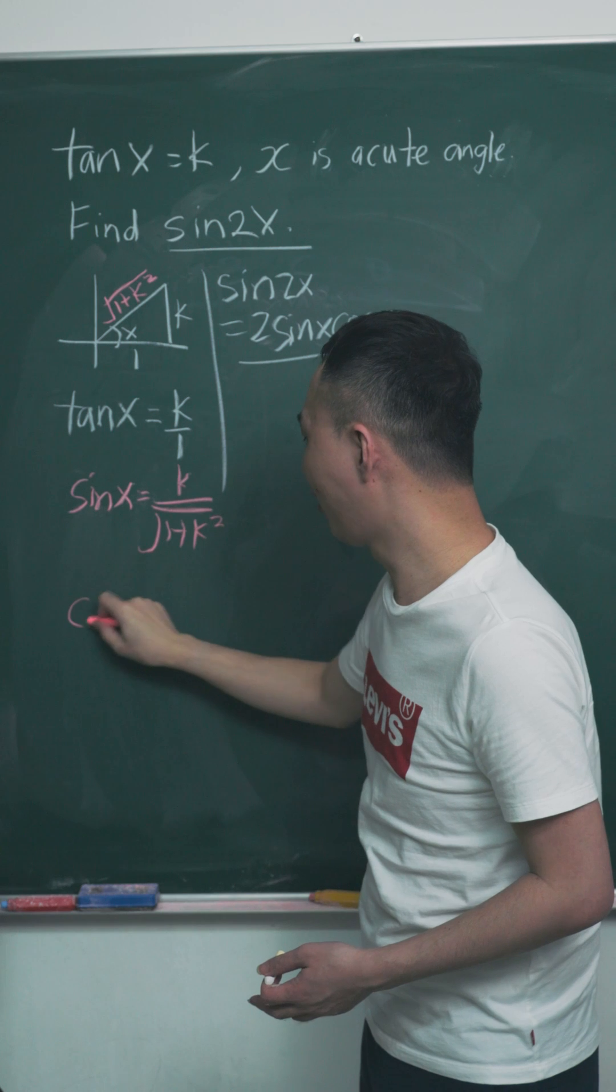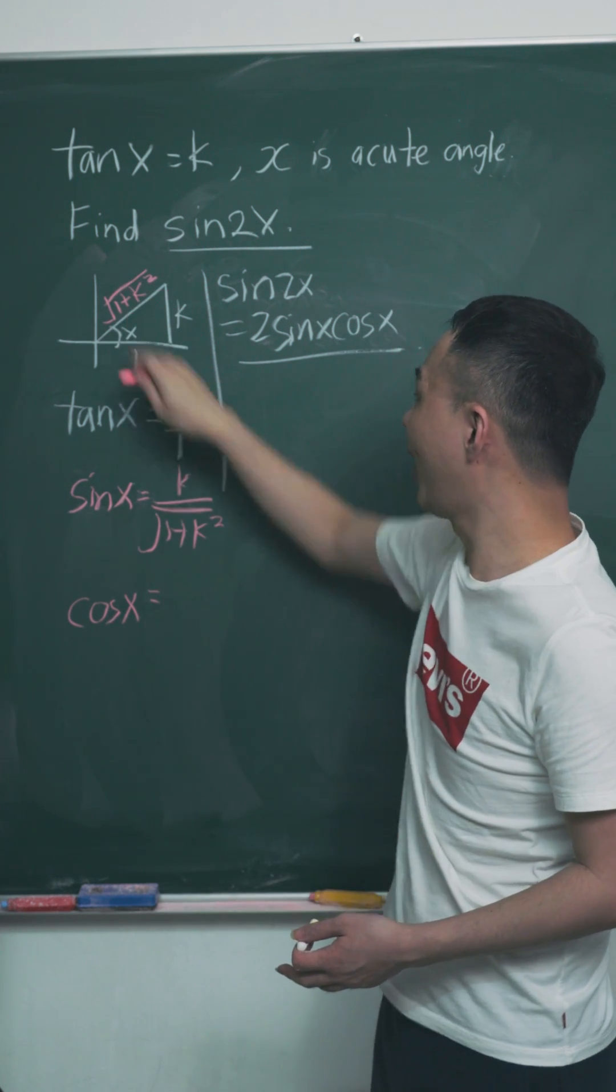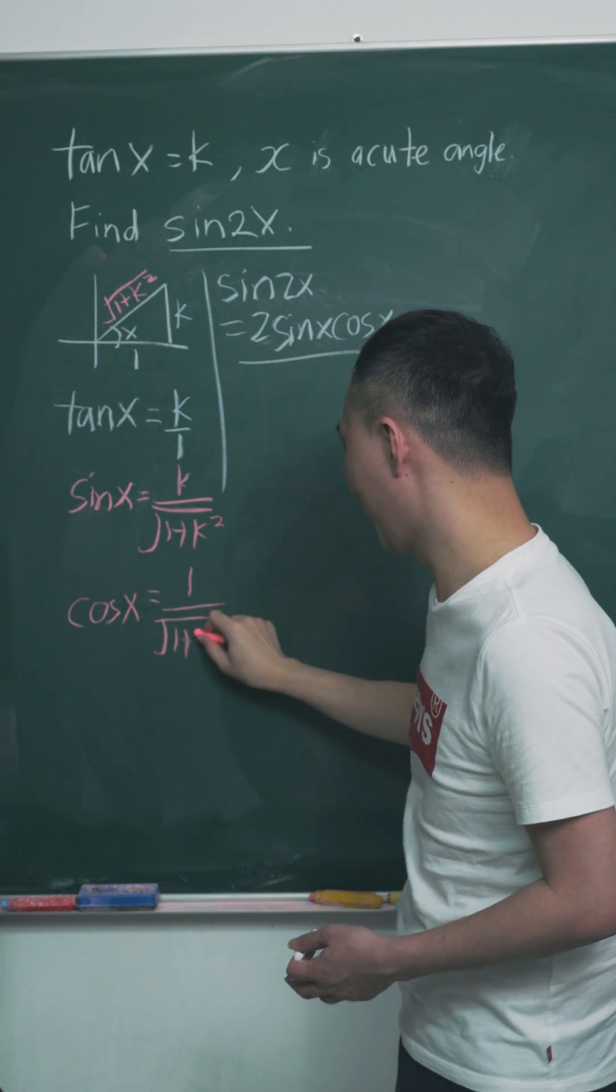And the same idea for my cos x. My cos x is basically adjacent over hypotenuse, which is 1 over square root of 1 plus k squared.